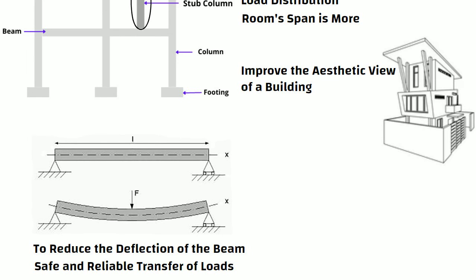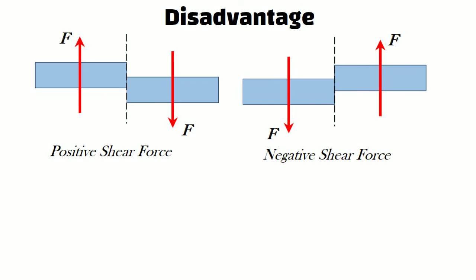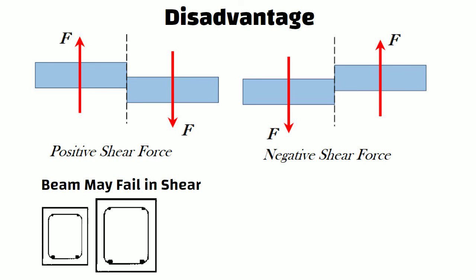We understood the applications of stub columns, but there is one disadvantage. A stub column increases the shear force in a beam on which it is rested, and the beam may fail in shear. So the beam's cross section should be increased, which may be uneconomical in certain circumstances.